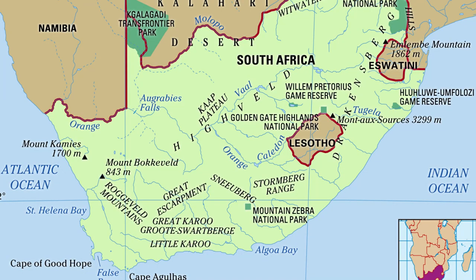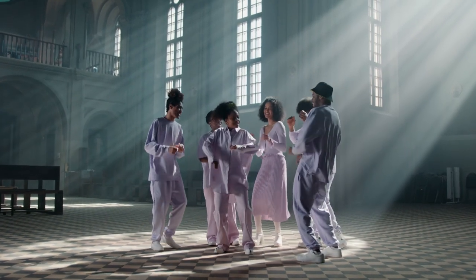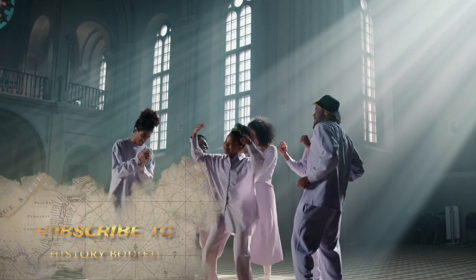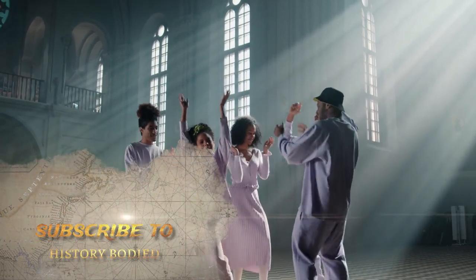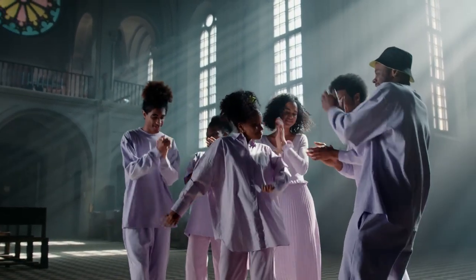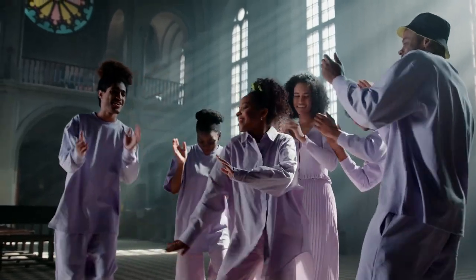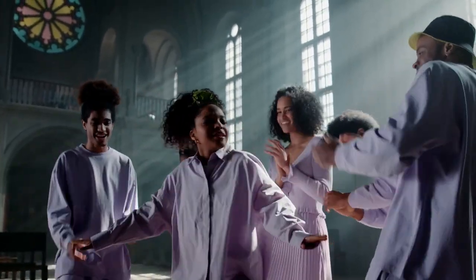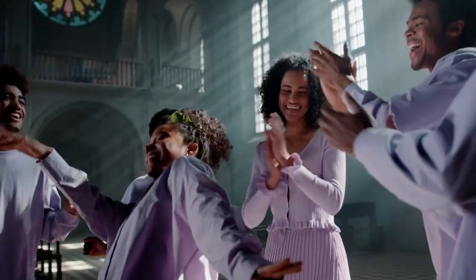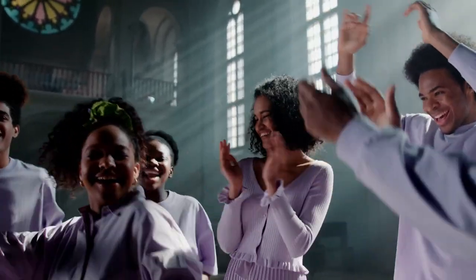South Africa has been famously referred to as the Rainbow Nation because it is made up of so many diverse cultures and religions. Within South Africa's borders are Zulu, Xhosa, Pedi, Tswana, Ndebele, Hindu, Muslim, and Afrikaner people, to name but a few. All of these people are united by calling South Africa home, and therefore their lives all contribute to forming a part of the country's heritage, identity, and culture.